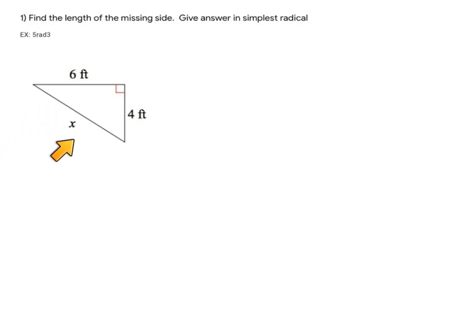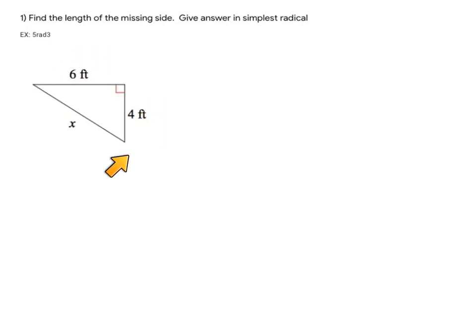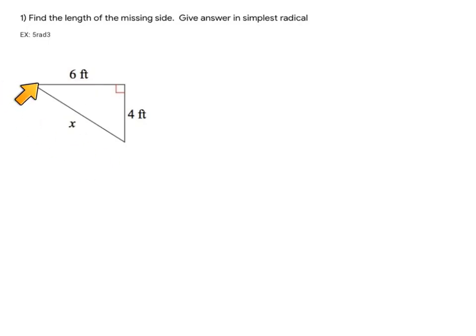I actually don't like this example problem so much because it leads students to believe a certain rule that isn't necessarily true. So I want to really emphasize this here. We want to identify the legs and the hypotenuse. X is the hypotenuse because it's the side that's opposite the right angle, or it's the longest side. Remember, the Pythagorean theorem says leg squared plus leg squared equals hypotenuse squared. It's not number squared plus number squared equals letter squared. Nowhere did I say that.